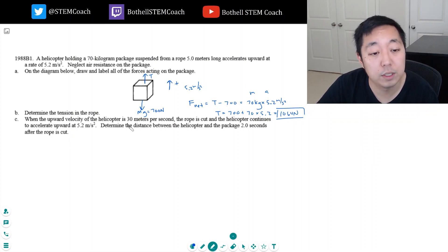When the upward velocity of the helicopter is 30 meters per second, the rope is cut and the helicopter continues to accelerate upward at 5.2 meters per second squared. Determine the distance between the helicopter and the package two seconds after the rope is cut.